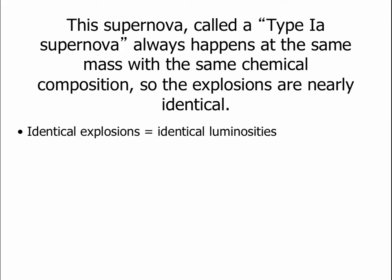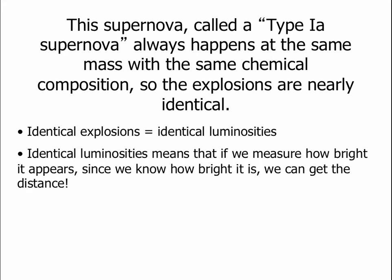So if they're identical explosions, this means that they will have identical luminosities. If we have identical luminosities, that means that if we can spot one of these explosions somewhere in the universe, and we measure how bright it appears to be, we already know how bright it is. And just like with the Cepheids, if we know its actual luminosity and its apparent magnitude, we can get the distance to the supernova. This is part of our distance ladder that we talked about in mini lecture one.